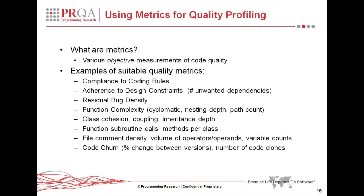We have an equivalent set of class measures which cover class cohesion — measuring how well the methods and data items in a class cohabitate. We have class coupling, which deals with how classes interact with other ones, and inheritance depth. There are also measures covering how functions and classes relate to others: the number of subroutine calls and the number of methods per class.